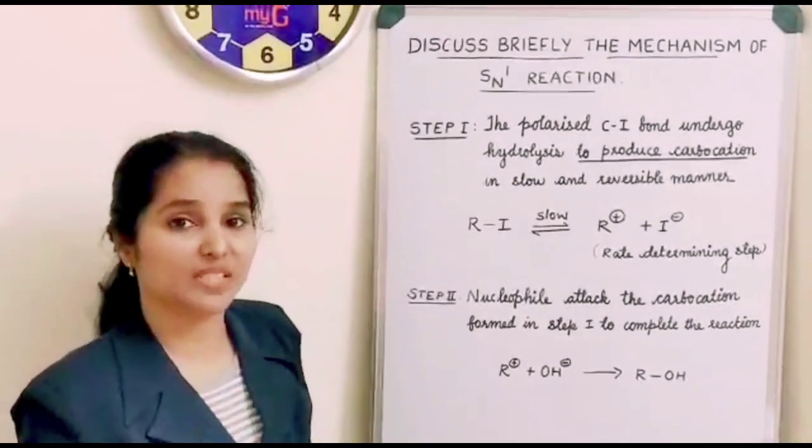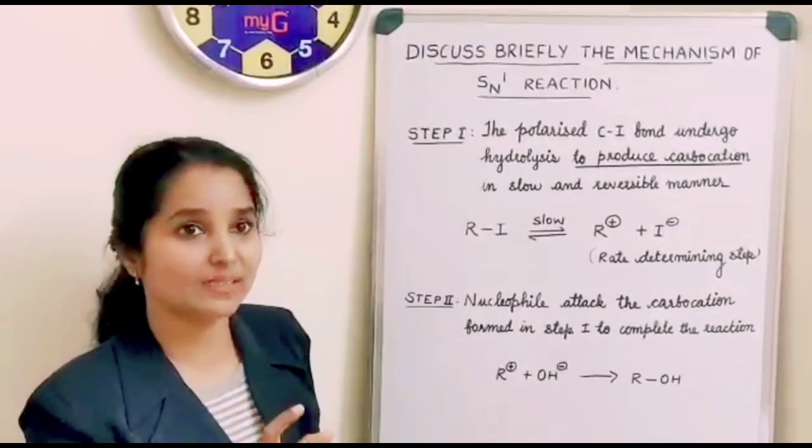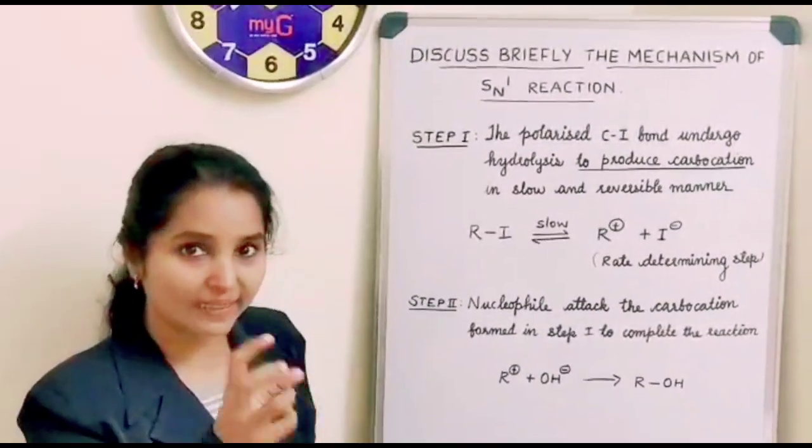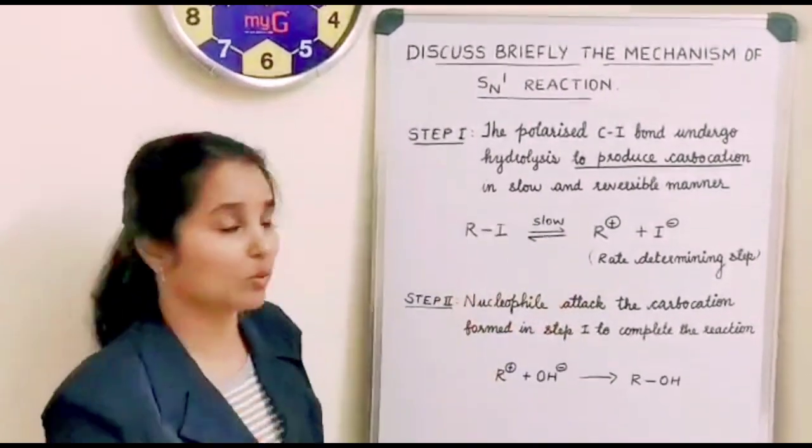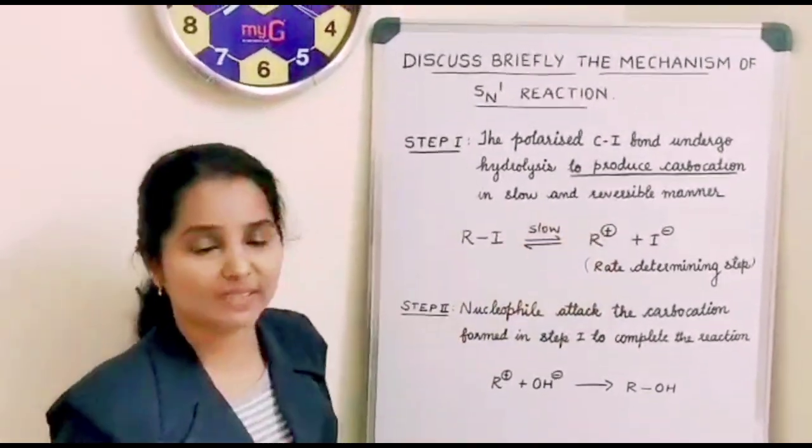It is a carbon which is having six electrons. That means in that particular alkyl halide the central carbon will be having only six electrons and so it will be positively charged. That is a carbocation.